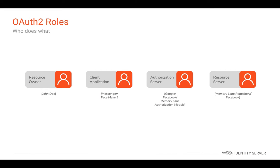OAuth 2 has four key roles: resource owner, client application, authorization server, and resource server. The resource owner holds a user account in an application and owns certain resources stored in that application. For example, John Doe has a user account in the MemoryLane application. The client application is a web or mobile application that accesses your resources on your behalf — Facemaker is such an application. The authorization server authenticates resource owners using their credentials. Some popular authorization servers in the world are Facebook and Google. In this sample, the MemoryLane authorization module is acting as an authorization server.